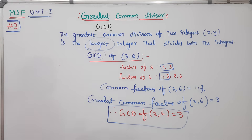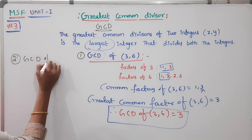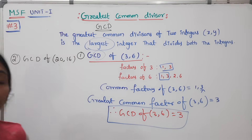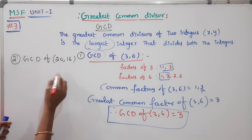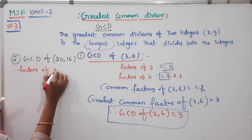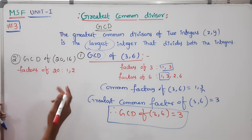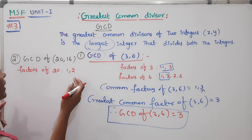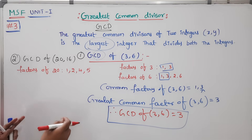Now consider the second example: find GCD(20, 16). First, find the common factors of both numbers. Let's find the factors of 20. The multiples table for 20 gives us: 1, 2, 4, 5, 10, and 20 as its factors. We check each table — 2×10, 4×5, and so on.